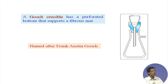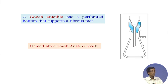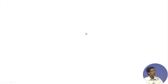This is the base with the adapter. On top of the adapter you place the Gooch crucible, transfer the precipitate onto it, and keep filtering. This arrangement is what you need for filtration using the Gooch crucible, which is different from filtration using regular filter paper.